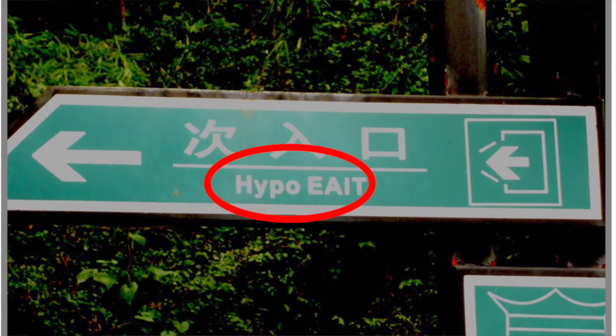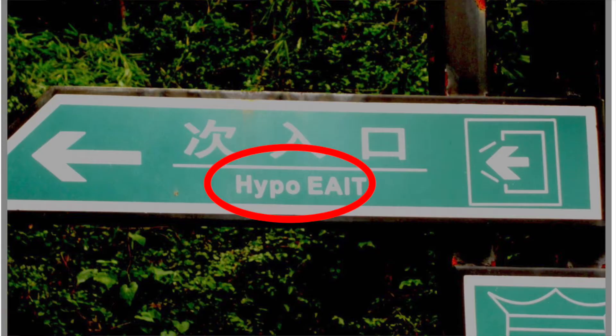This leads to problems like this: if you take a look at this picture, it says 'hypo-e-a-i-t.' There's a mistake because 'hypo' means secondary, and the 'e-a-i-t' — I can clearly see that someone saw an 'x' and thought it was an 'a,' so instead of 'secondary exit' it became 'hypo-e-a-i-t.' Those are mistakes that happen at the factory.